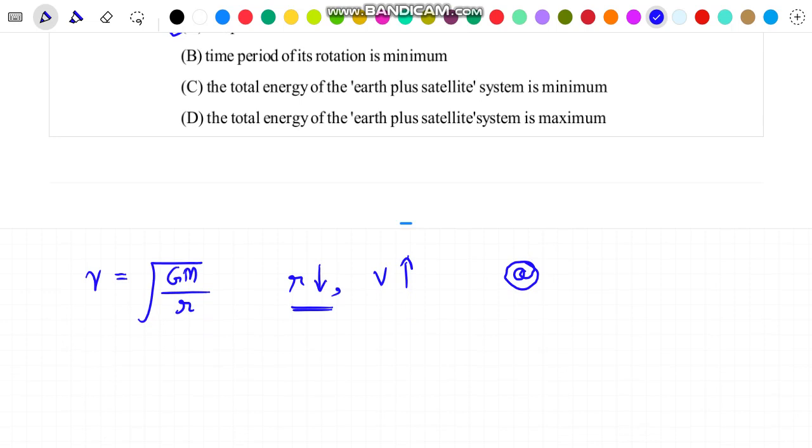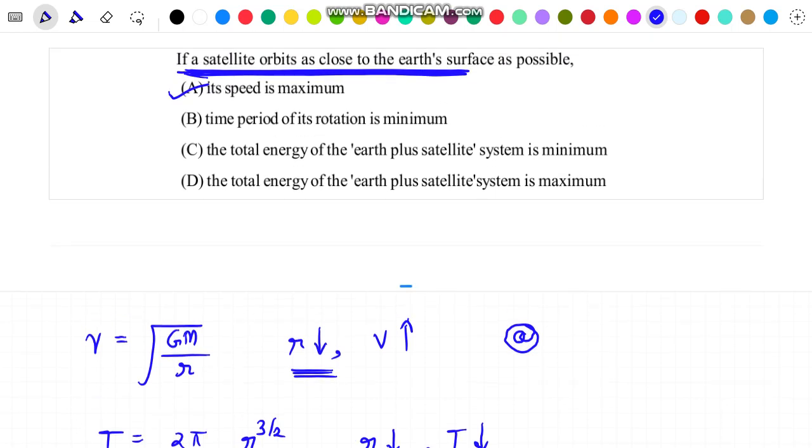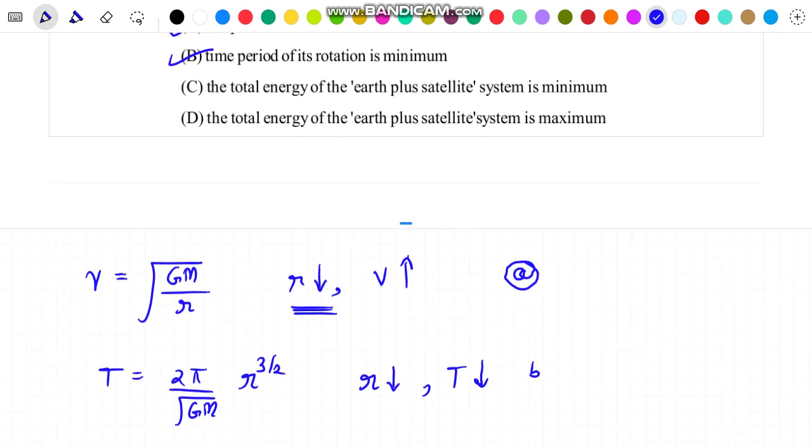Now we know that the expression of time period for an orbiting satellite can be written as 2π times root of R³ over GM. From this expression, with decrease in the value of R, the time period will actually decrease. Since R of this particular satellite is minimum possible, the time period will be minimum. So again, option B is also correct.